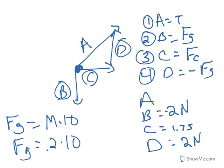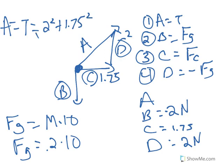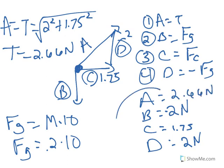And then, it should be fairly obvious that if I have 1.75 here and 2 here, I do the Pythagorean theorem to get A. So, A, in this case, is equal to the tension, which should equal the square root of 2 squared plus 1.75 squared. So, 2 squared plus 1.75 squared, square rooted, equals 2.66. Tension is equal to 2.66 newtons. And this gives us the answer for part D.